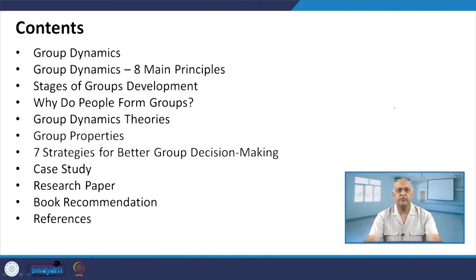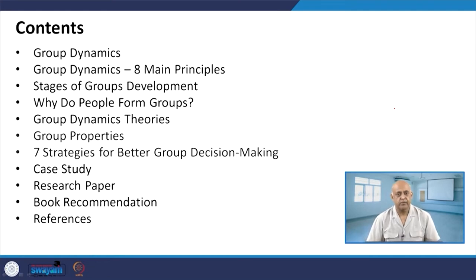In this session, we will talk about group dynamics as we are discussing team effectiveness. We will discuss exactly what group dynamics is. We have previously talked about the difference between a group and a team, and how to convert a group into a team. Now we will discuss those working together in a group and what type of dynamics exists. There are eight main principles we will discuss: stages of group development, why people form groups, group dynamic theories, group properties, seven strategies for better group decision making, then a case study, research paper, book recommendation, and references.